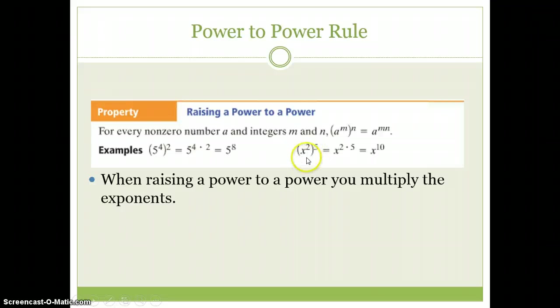And then with variables, same thing - x squared to the fifth. So again, these powers are right next to each other, these exponents are right next to each other.